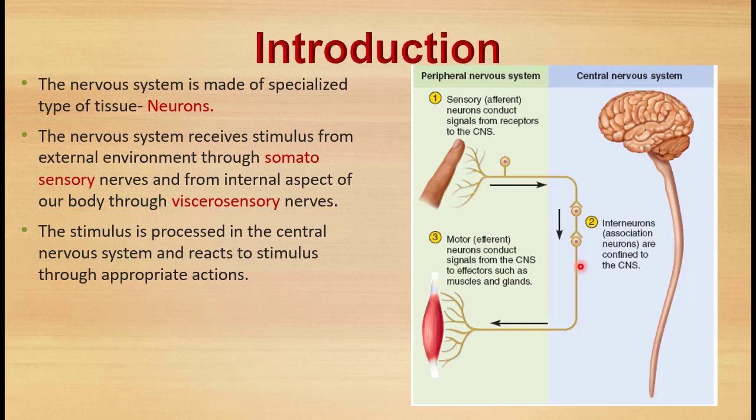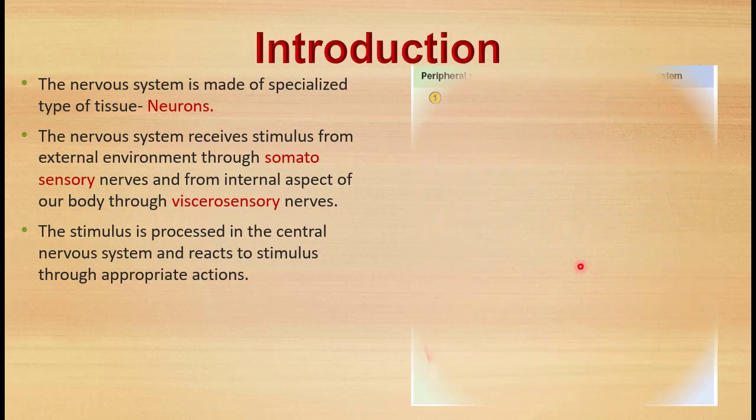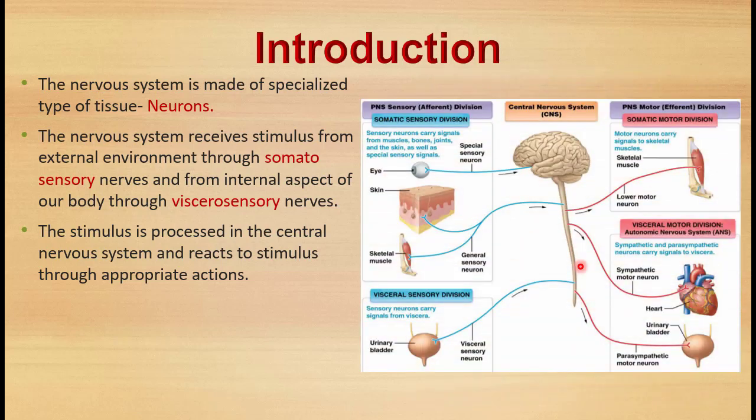Most of these aspects have been discussed in the general anatomy lecture, so kindly refer to the nervous system class of general anatomy where I have discussed in detail about the reflex arc, what a typical spinal nerve is, the types of neurons, types of axons, how to classify them, and the synapse structure. Please refer to the general anatomy class.